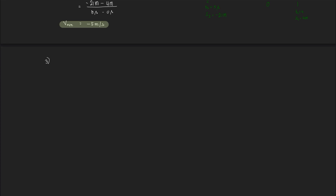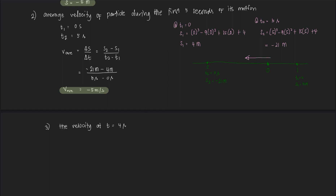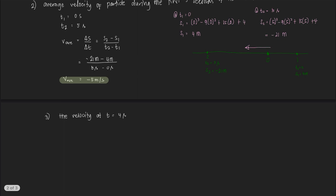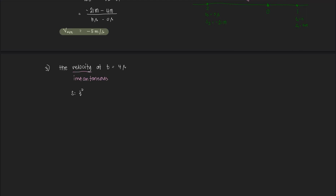For question number 3, we are looking for the velocity of the object at T equals 4 seconds. At that specific instant, what was the velocity of the particle? This velocity is instantaneous velocity. We learned that instantaneous velocity is the first derivative of S equals F of T. So if S equals T³ minus 9T² plus 15T plus 4, then DS/DT is equal to 3T² minus 18T plus 15.